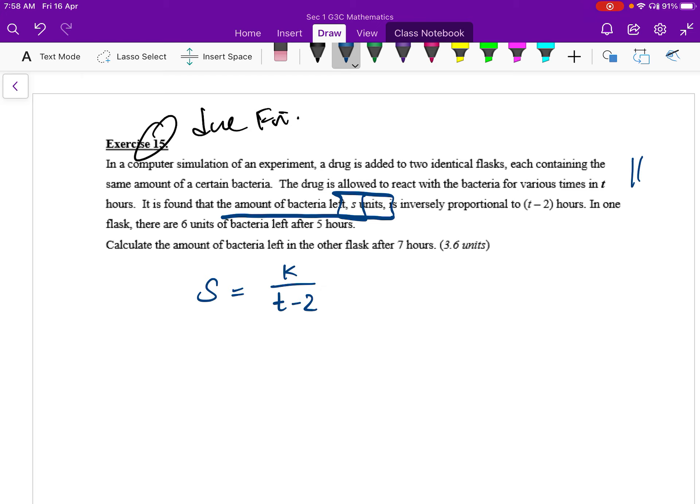So you write it as K over T minus 2. This is after some time T. We need to take away 2 from that and we use a constant value K to divide by whatever is the result. That will tell us the amount of bacteria left. So this is our formula. But this formula has one unknown which we don't know what that is.